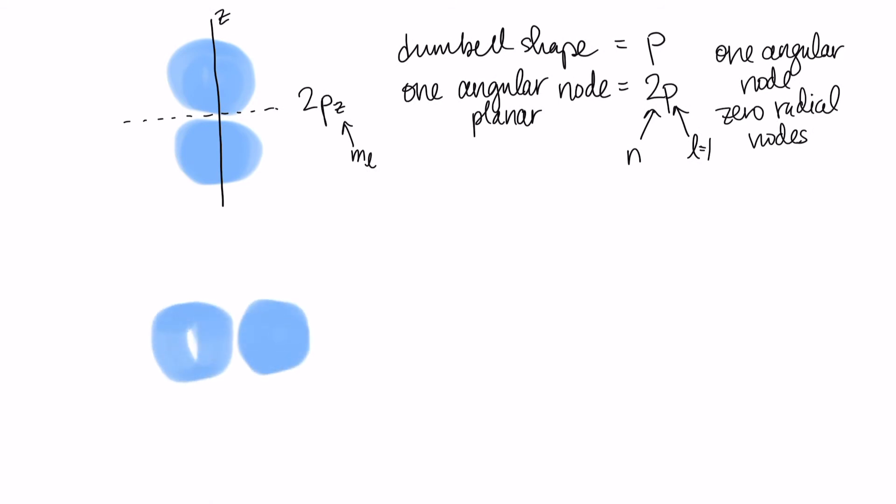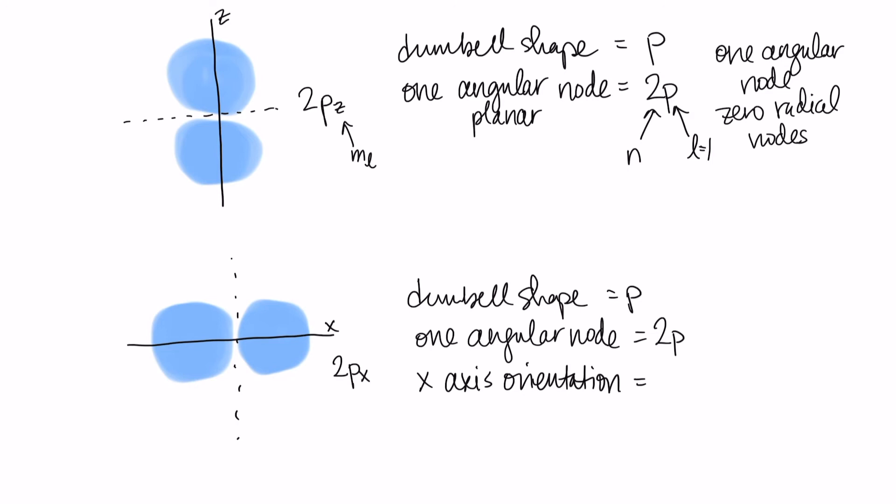This time going in the other direction. Again it has this angular node, but this time it's located on the x axis. And so this one would be the 2px orbital. Again, my dumbbell shape tells me that it's a p orbital. My one angular node tells me it's 2p because the number of nodes plus 1 would give me my n. I have one node plus 1, that gives me 2. And because it's on the x axis, that tells me my 2px. And that's where all three quantum numbers are showing up in this symbol here: n, l, and m sub l.